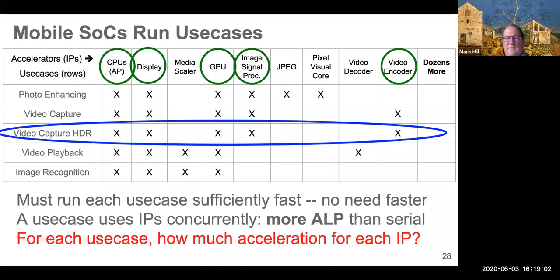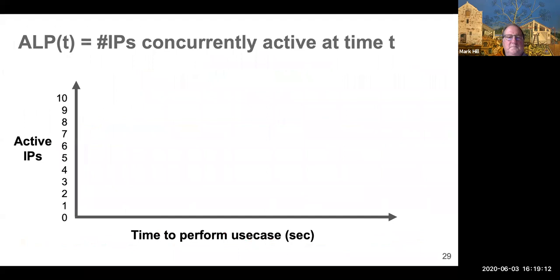Use cases operate more concurrently than serially. And there's questions like, for a given use case, how much acceleration do you really need? For example, for recording 4k video, you don't have to record faster than the video is coming at you. After that, you're wasting power.